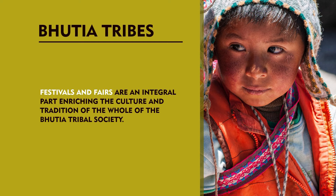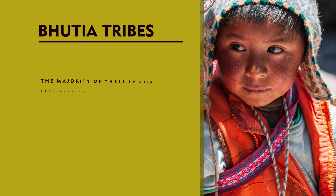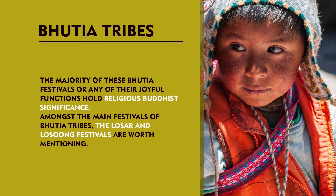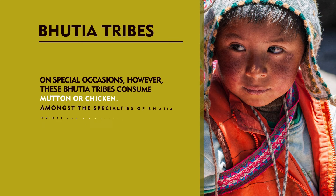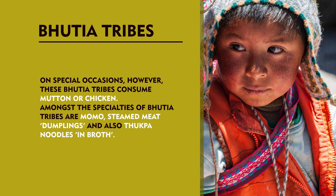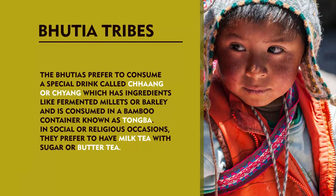Festivals and fairs are an integral part enriching the culture and tradition of the Bhutia tribal society. The majority of these Bhutia festivals hold religious Buddhist significance. Amongst the main festivals of Bhutia tribes, the Losar and Losung festivals are worth mentioning. The Bhutia cuisine comprises rice which is their staple food. Other dishes include fried vegetables, animal meat including pork and beef. On special occasions, these Bhutia tribes consume mutton or chicken. Amongst the specialties of Bhutia tribes are Momo, steamed meat dumplings, and Thupka, noodles in broth. The Bhutias prefer to consume a special drink called Chang or Chiang which has ingredients like fermented millets or barley and is consumed in a bamboo container known as Thongba.